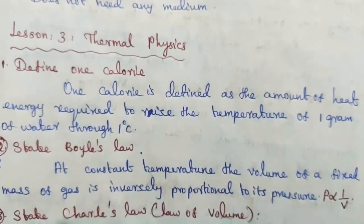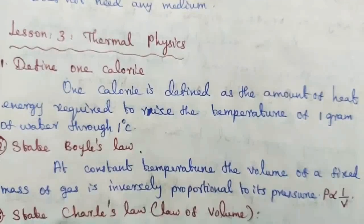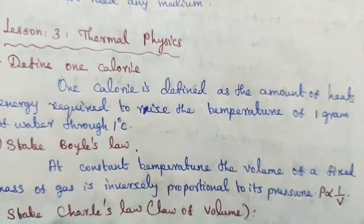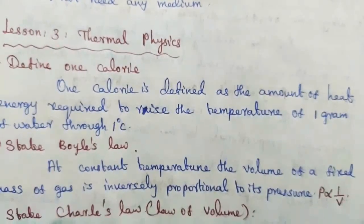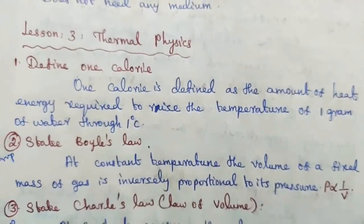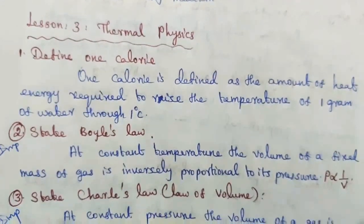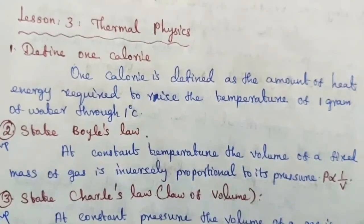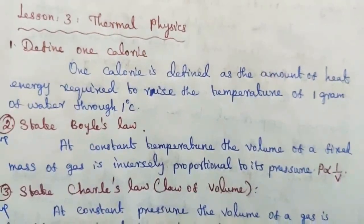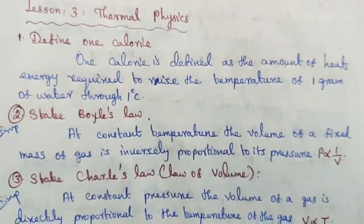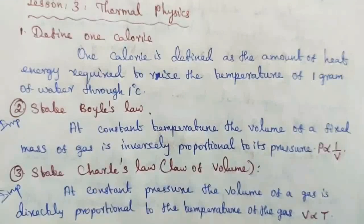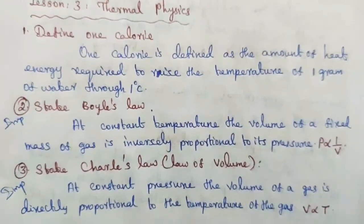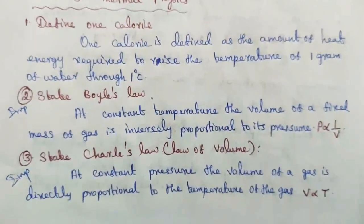Boyle's law: at constant temperature, the volume of a fixed mass of gas is inversely proportional to its pressure — P is inversely proportional to V. Question number three, important: state Charles' law or law of volumes. At constant pressure, the volume of a gas is directly proportional to the temperature of the gas — V is directly proportional to T.